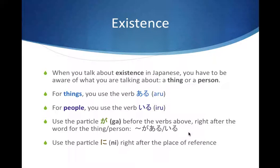The other point is: if you're talking about something that exists in some place — for example, 'there is a library over there' — you're going to use the particle Ni right after the place of reference. So you'd say 'over there Ni, whatever.' Use Ni right after the place of reference.